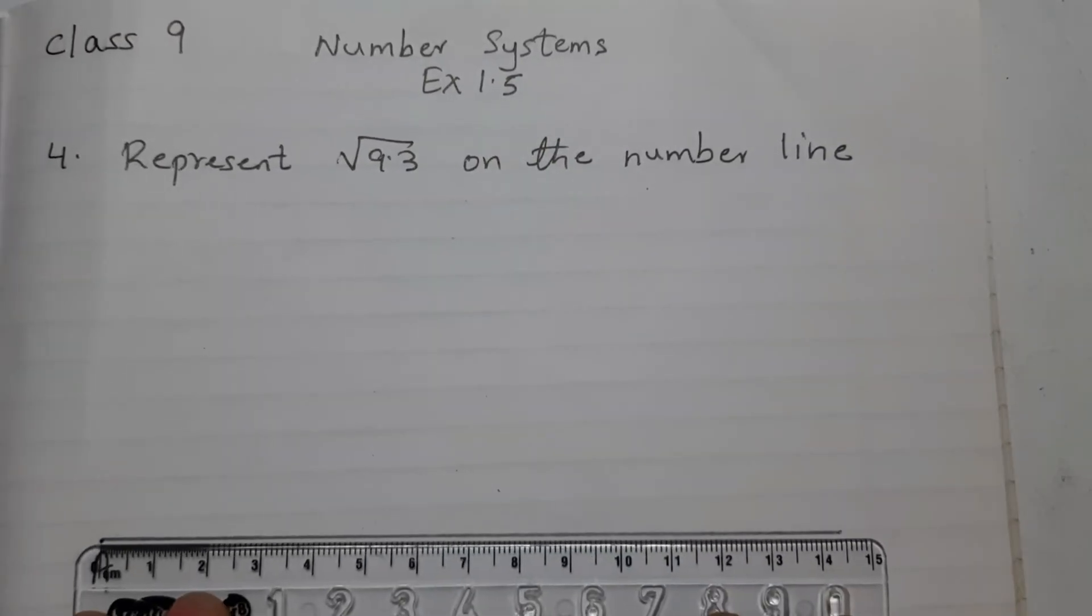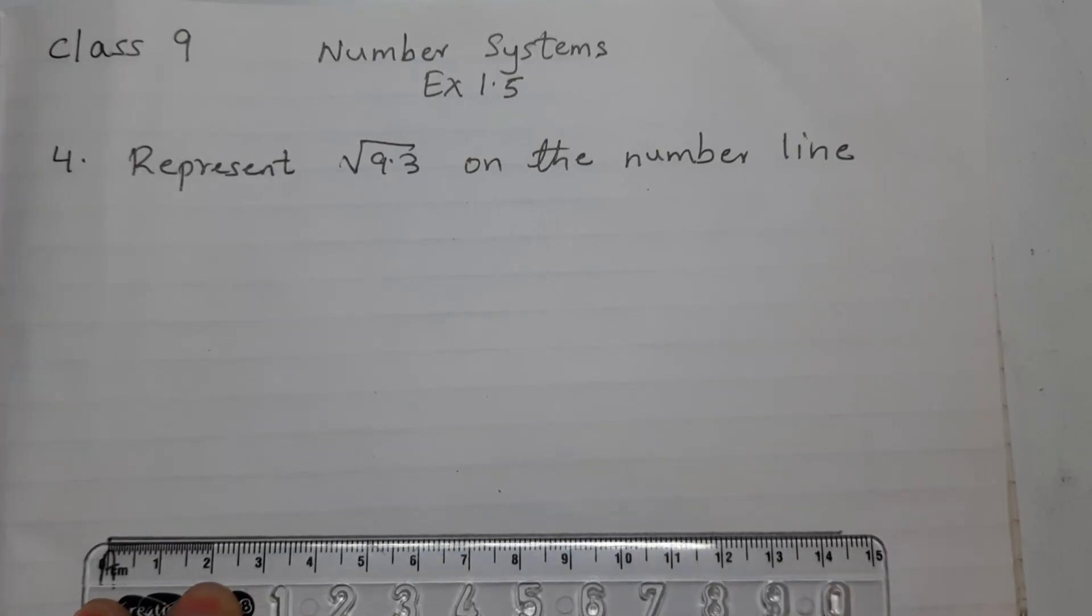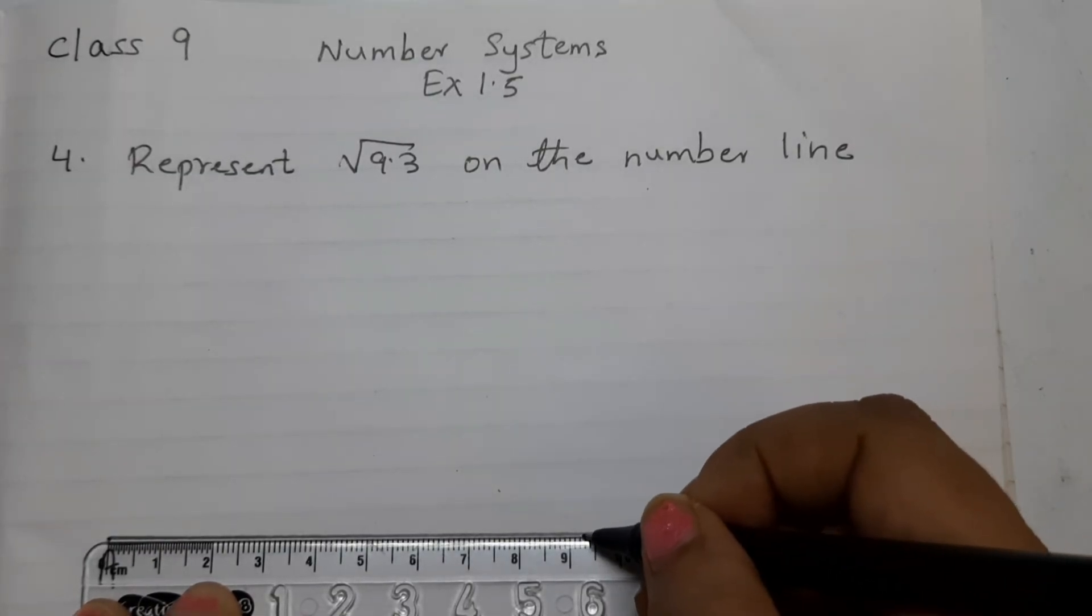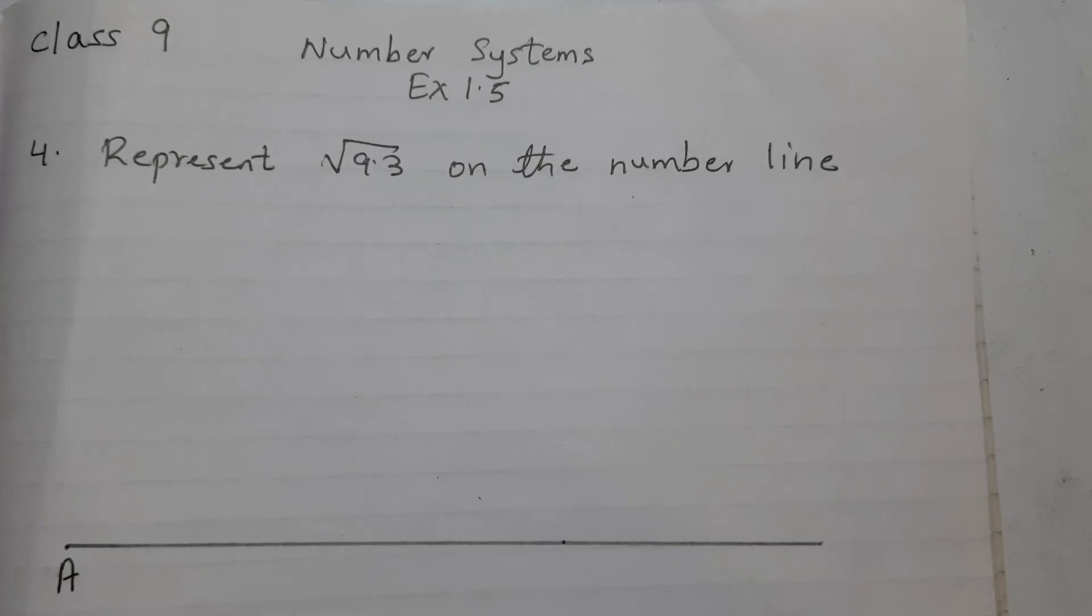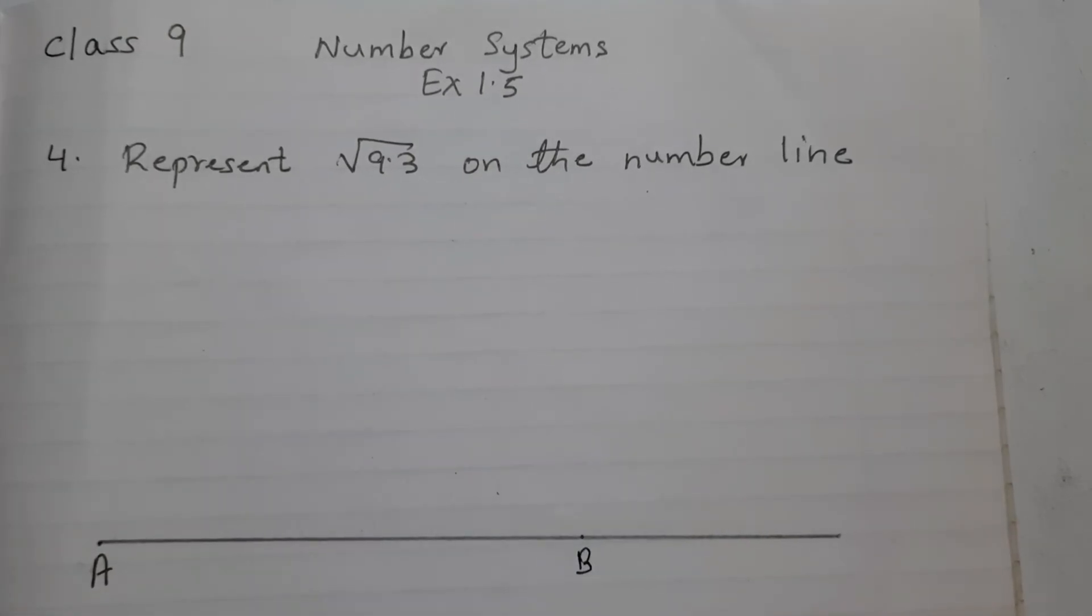Mark the distance 9.3 from point A. So, this point here is 9.3, mark this as B. AB is 9.3 cm.